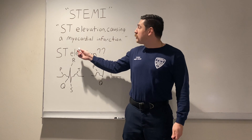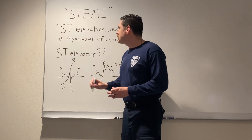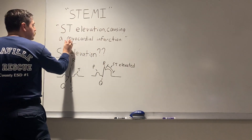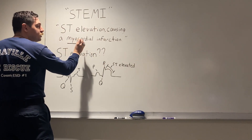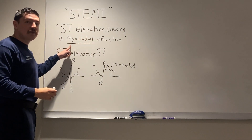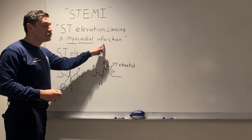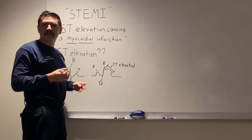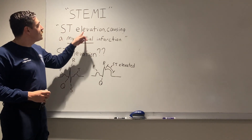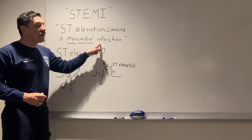Next, we have the term myocardial infarction. Let's break it down. 'Myo' refers to muscular tissue. 'Cardio' relates to cardiac — we think of the heart. So myocardial refers to the muscular tissue of the heart. An infarction, along with ischemia, means a lack of oxygen. So what we're saying is ST elevation causing the muscular heart to receive a lack of oxygen.